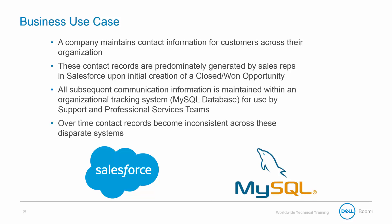Over time, these contact records are becoming inconsistent across these disparate systems. In other words, the information is coming into Salesforce effectively during the initial creation of the data. However, the rest of the company does not use Salesforce. As these other departments continue to work with the client, they update the client's information on the MySQL database. The issue we're seeing is that the database has very current contact information for the clients, but Salesforce ends up having outdated data.